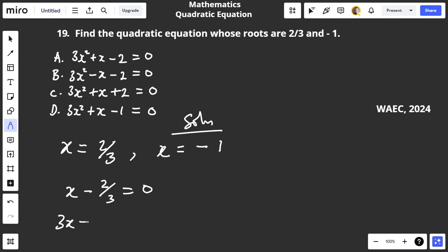For this one you have x + 1. When you move -1 to that side it becomes x + 1 = 0. These are the two functions that will be multiplied.